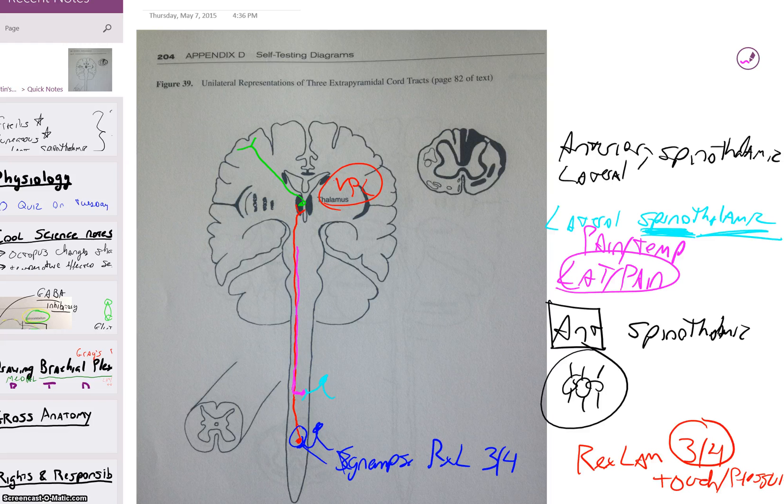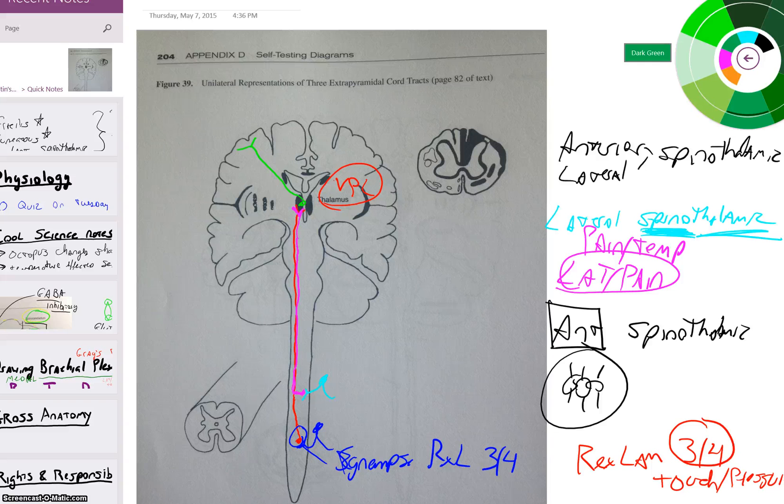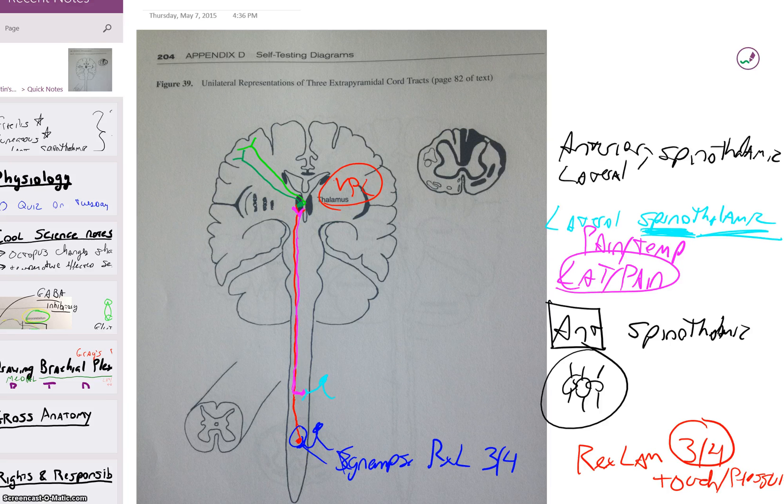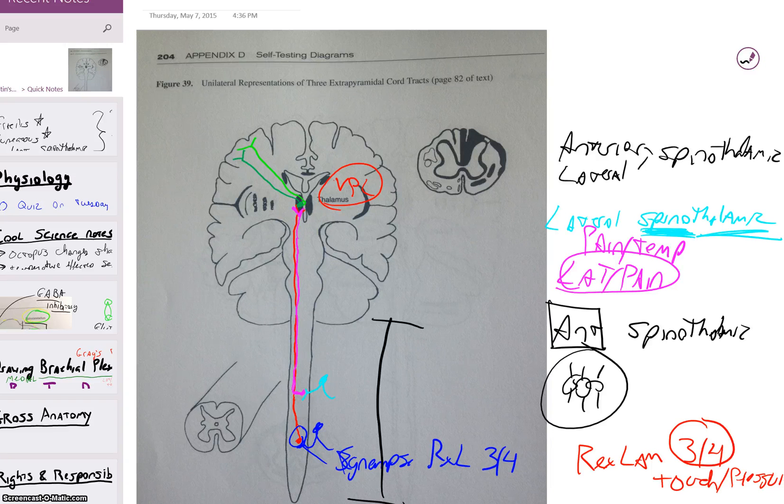Travels up the spinal cord, close to the anterior spinothalamic, but a little bit different. It comes up, synapses on the thalamus, the VPL of the thalamus, same thing as the other one. Then we have our third neuron going from here to postcentral gyrus. Nothing real special about these. The anterior and lateral spinothalamic deal with their associated senses in the whole spinal cord. So anterior spinothalamic deals with light touch and pressure in the whole cord, and the lateral spinothalamic deals with pain and temperature in the whole spinal cord.